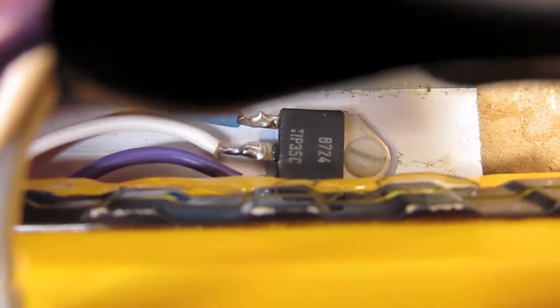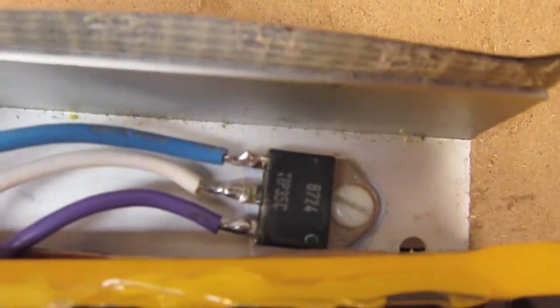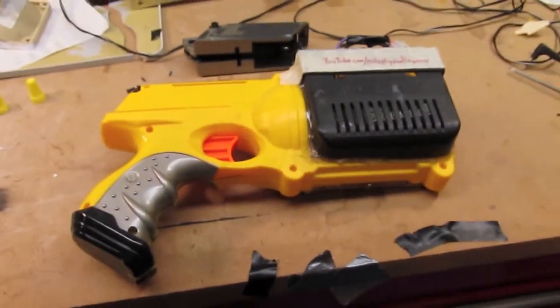And down there is the heat sink. Aluminum angle heat sink for a TIP35C transistor. And that is the switching element in the strobe light circuit I used as a power source.